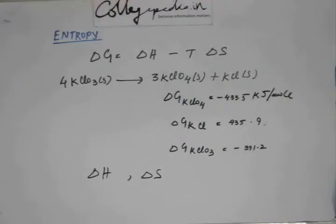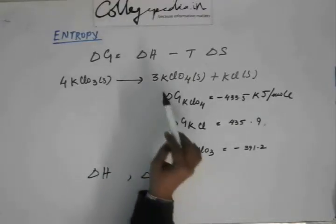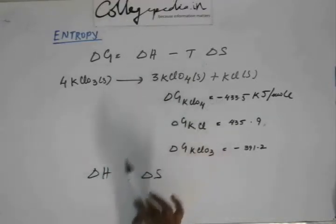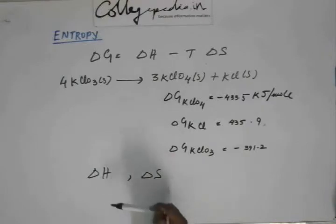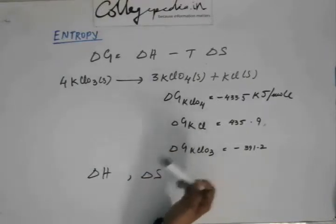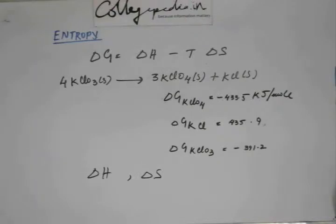So if they do that, what you have to do is you have to calculate delta S of system separately, and you have to calculate delta H of system separately. And then you have to feed in delta H of system, because remember, in these expressions, these are all of system. So feed in the values of delta H of system, delta S of system, temperature. If they have not provided, we will assume it to be 25 degrees Celsius.